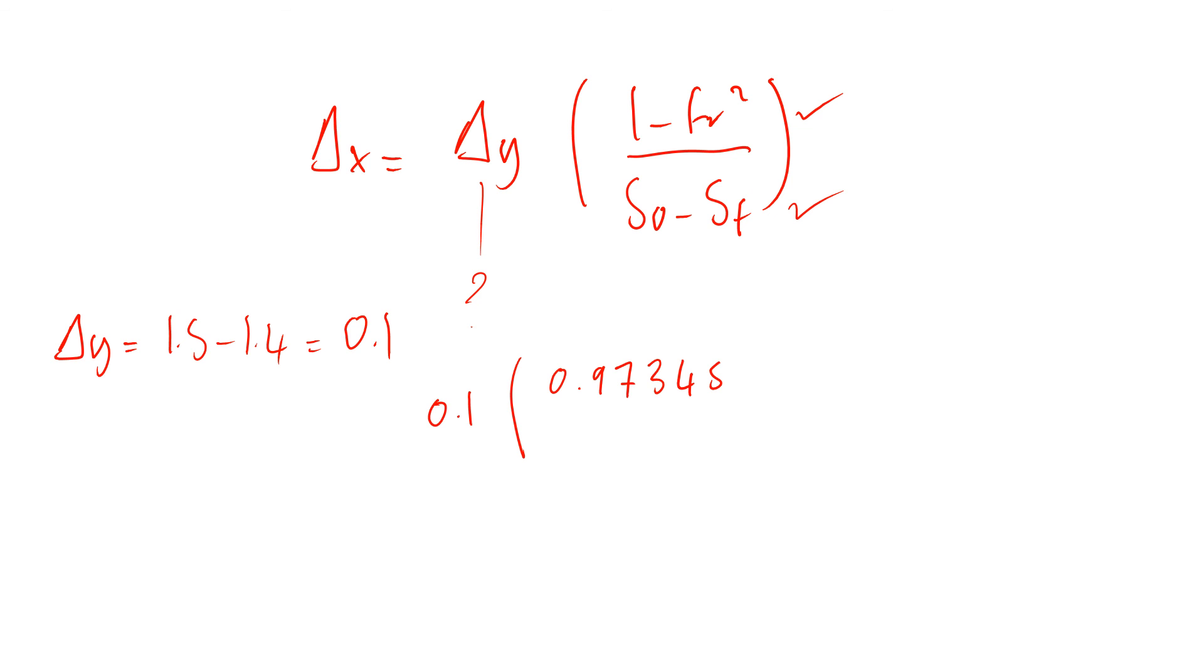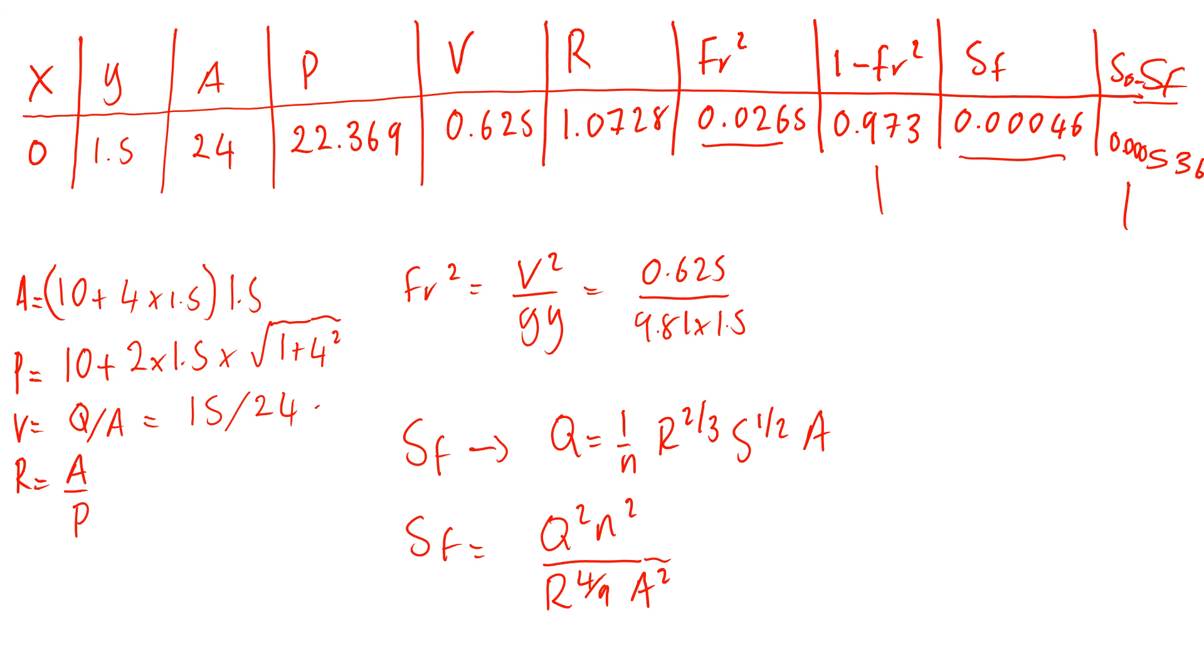So what you get is 0.1 times 0.973468 divided by 0.00053621. The answer you get from that is 182 meters. So it's saying 182 meters upstream the depth will reduce to 1.4 meters. That's one step using the direct step method.